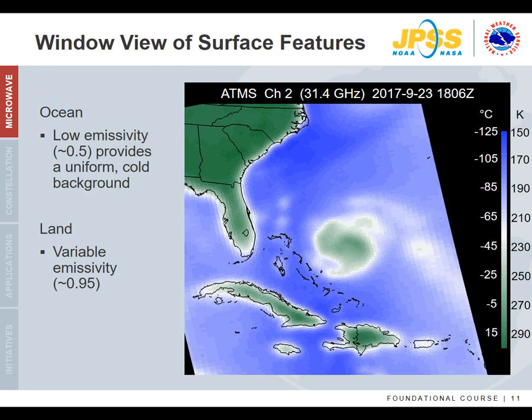This and the next three slides show example microwave channel imagery from the Advanced Technology Microwave Sounder, or ATMS. This is the 31.4 GHz window channel. For interpretation, it is important to note that land emissivity is variable with a high mean value around 0.95, and ocean water emissivity is more consistent but with a low value around 0.5. The low ocean emissivity makes detection and measurement of atmospheric phenomena far easier over the ocean due to the high contrast between the relatively cold background of the ocean surface and the warmer emission from falling rain.